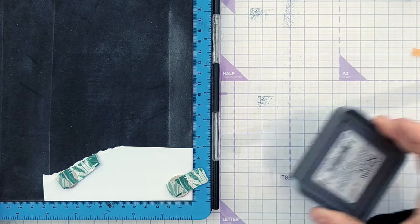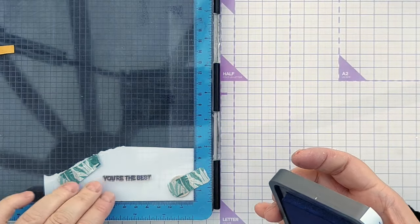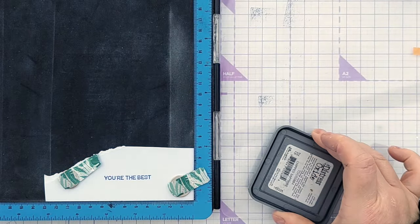For my sentiment I chose a you're the best stamp and I stamped that in chipped sapphire onto some smooth white card which I then die cut out using the small stitched rectangle die.